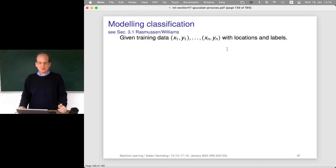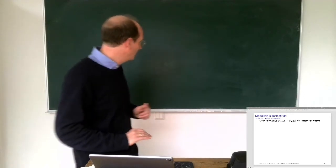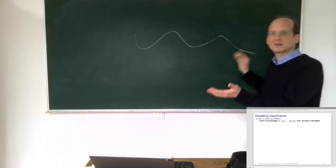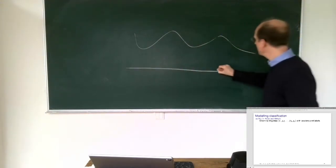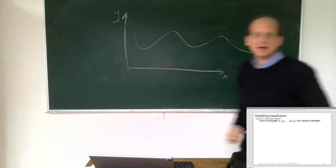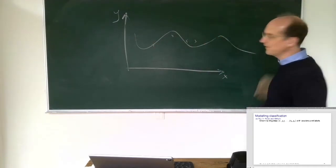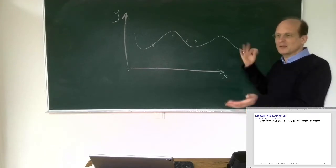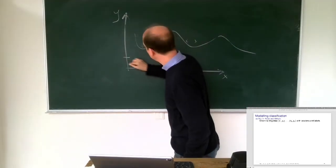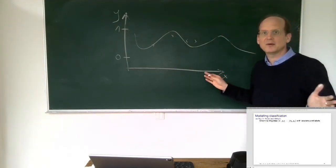Let me draw an example on the board. In GP regression, our locations X were one-dimensional and our values Y were some real number. For a classification problem, we only have exactly two values: zero and one. Observations at certain locations get labels — for example, some are minus and some are plus — drawn at zero or one on the y-axis.